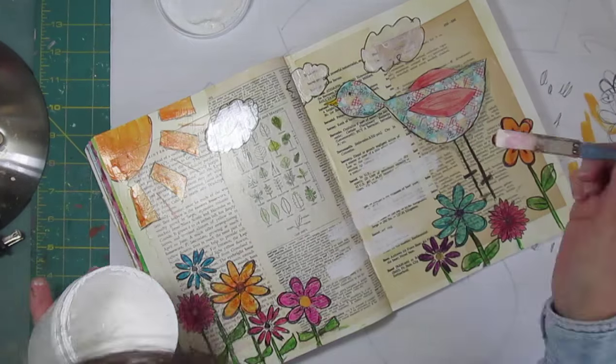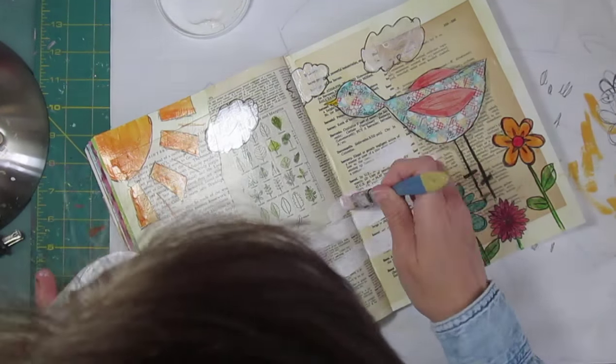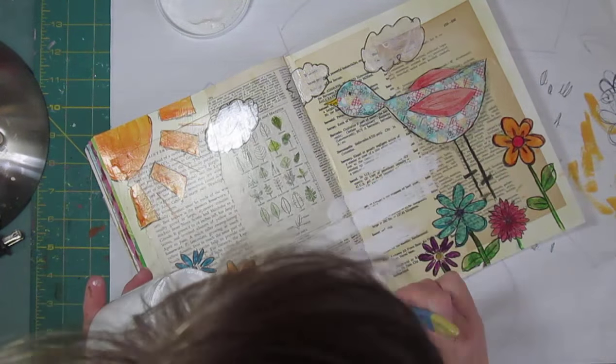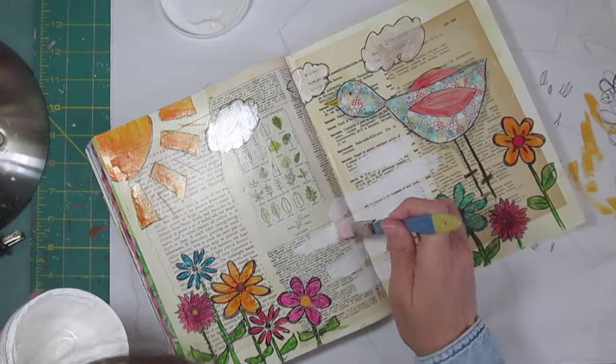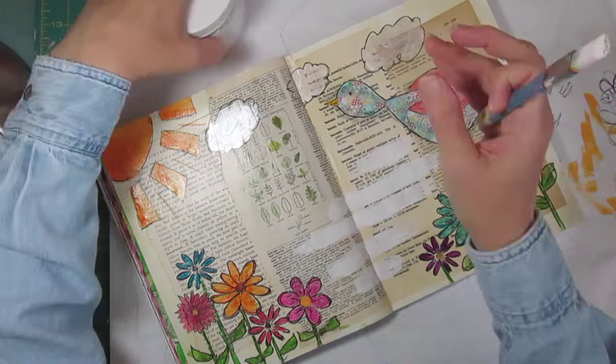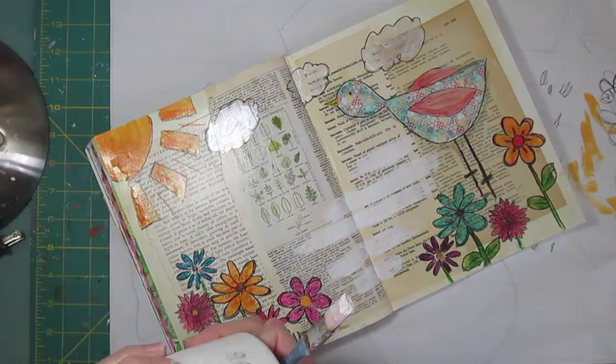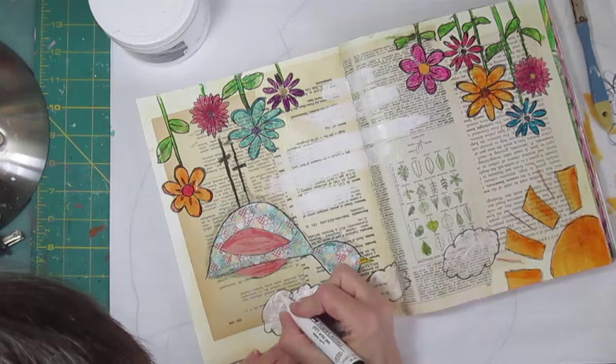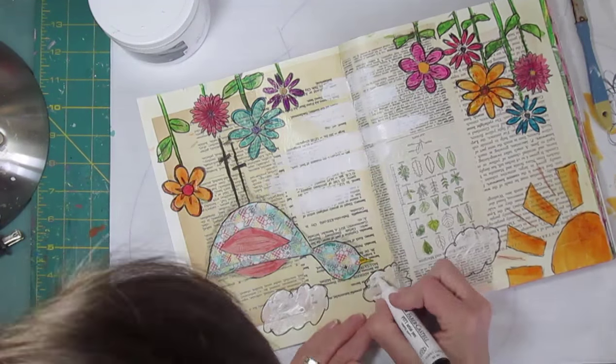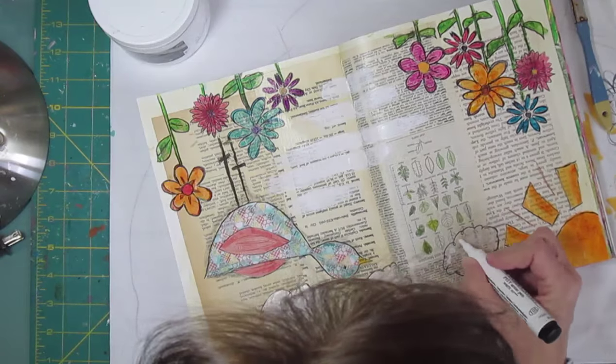And I'm going to add some white marker, and it's a Faber-Castell marker that has a different kind of tip on it for the clouds here in just a moment. And I'm adding some white gesso to a few different spots here in the background, so I'll have a place to do my writing. And here's adding the markers onto the clouds.